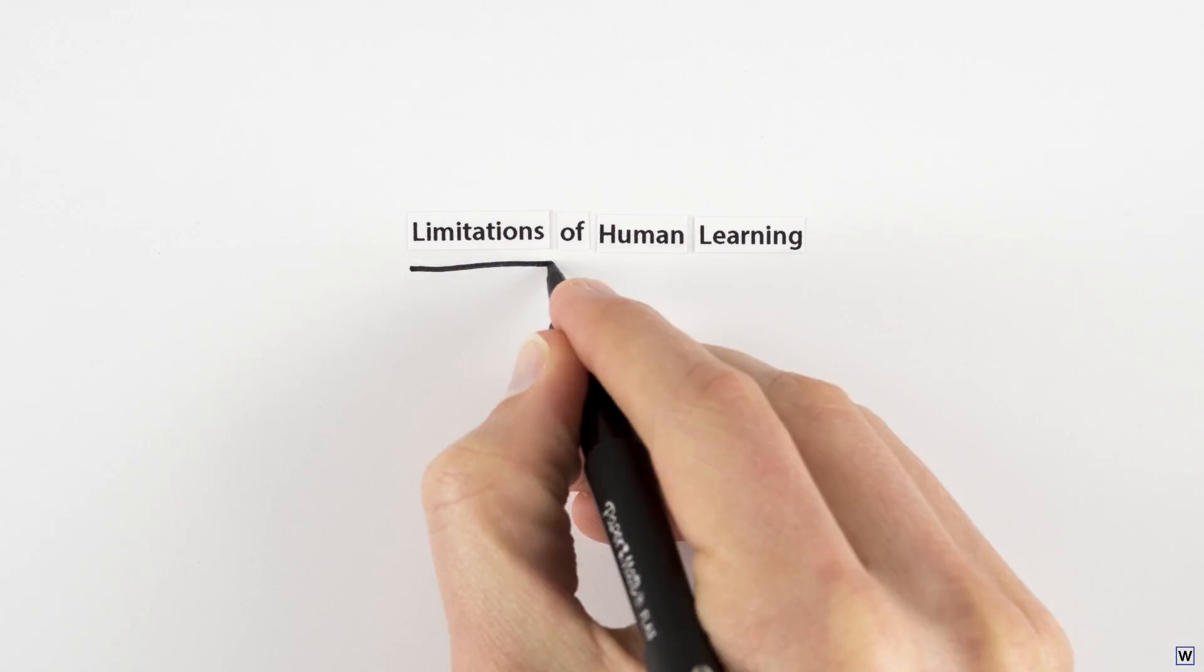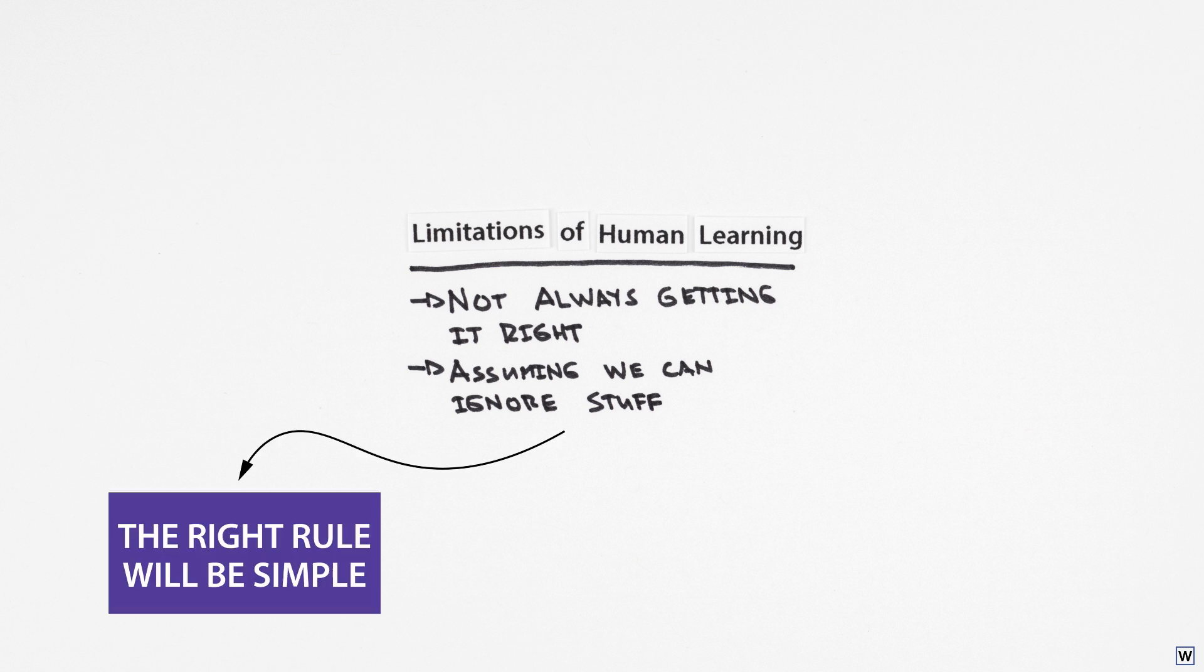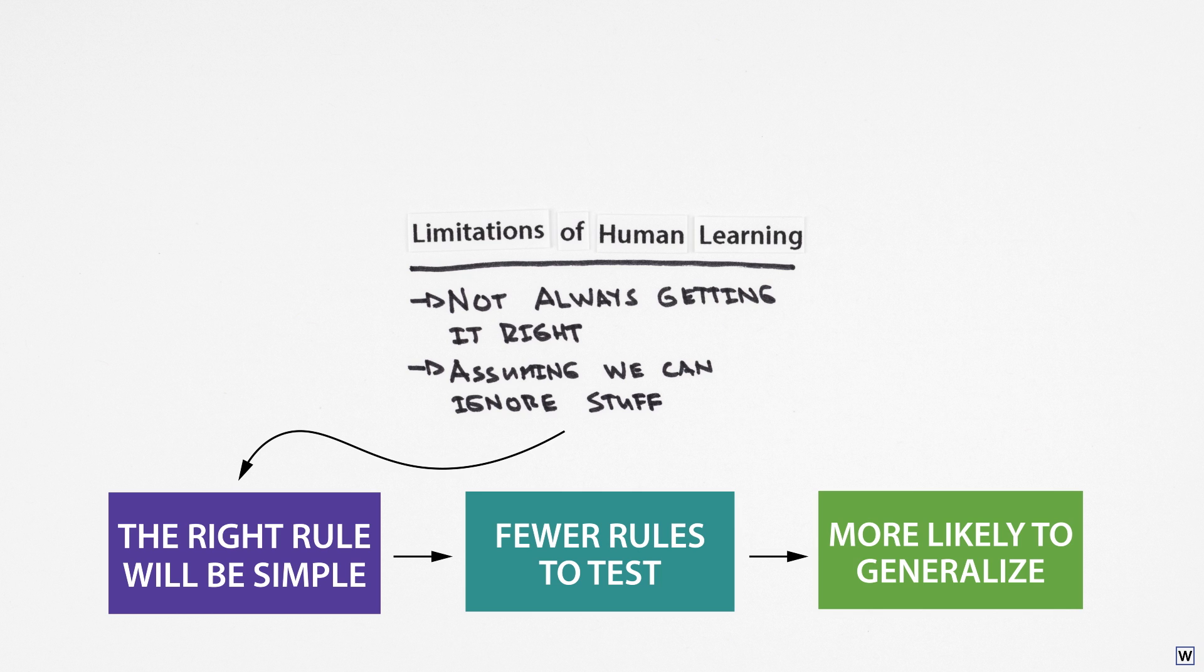Last time, we decided that to learn from data, we need to make some assumptions. Specifically, before we begin learning, we need to assume that our solution is simple. This assumption had the all-important effect of limiting the number of rules we tried out on our data, reducing the probability of our learning algorithm performing artificially well by chance.